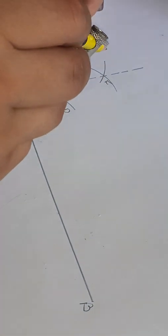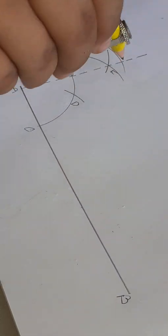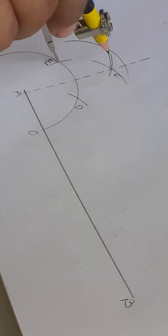Put your compass needle at the junction of F and cut an arc here, and put your compass needle at E and cut an arc here.